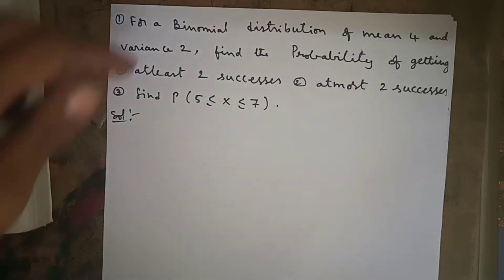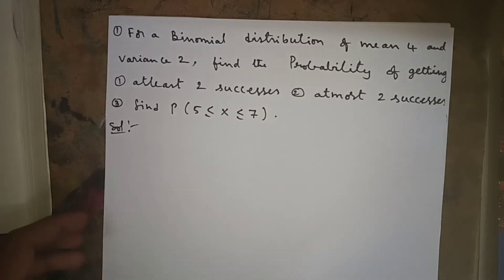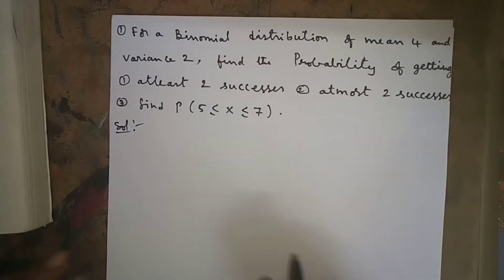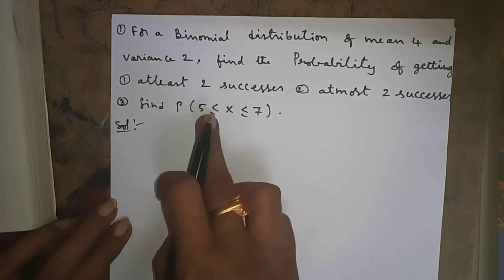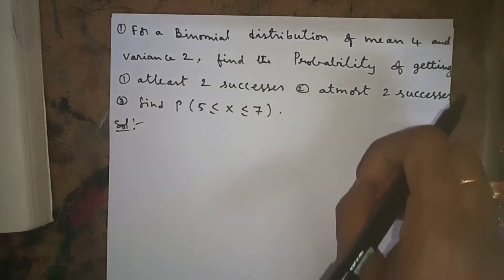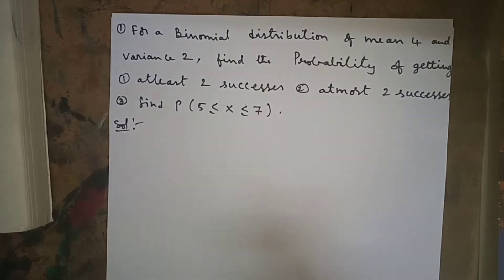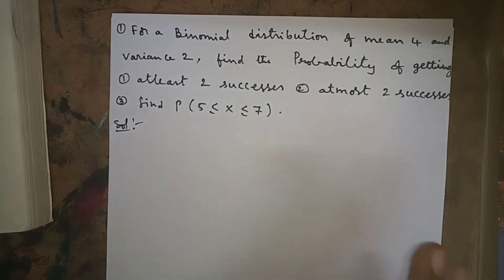Now we will look at a few binomial distribution problems. First, how do we identify whether a given problem is a binomial distribution problem or a Poisson distribution problem? Both binomial distribution and Poisson distribution come under discrete random variables.